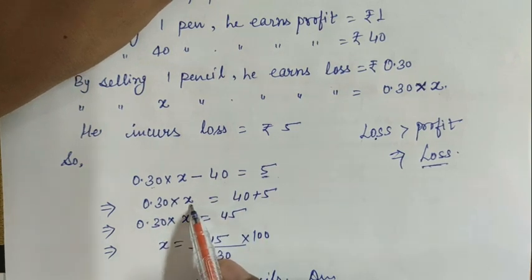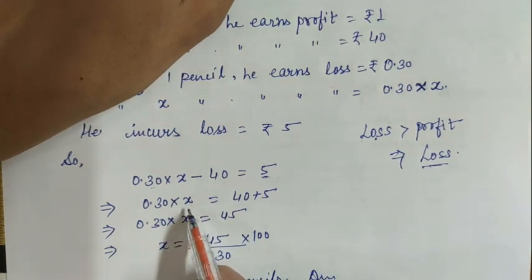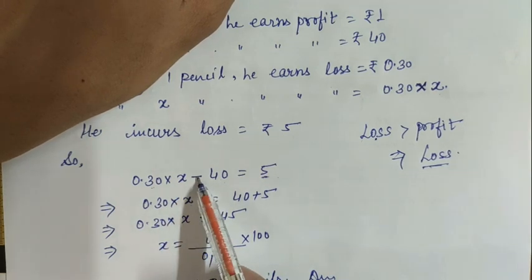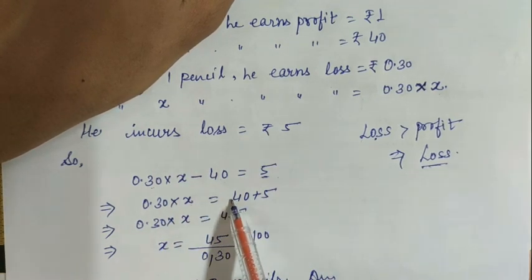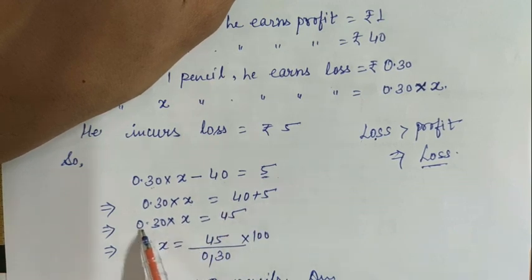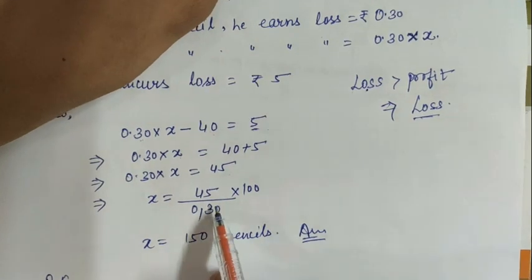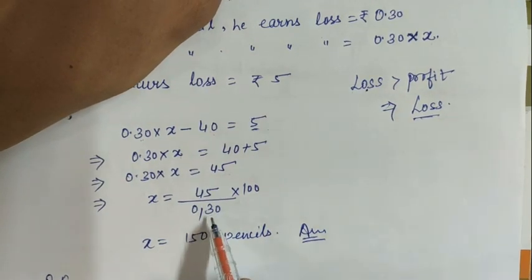If we find out x, we shift the rest to the other side. If we shift to this side, 40 shifts, so 0.30x = 40 + 5 = 45. Again, this is the multiplier. If we find x, we shift the number again. What will happen? Divide: x = 45 / 0.30. Here we multiply by 100 to remove the decimal.